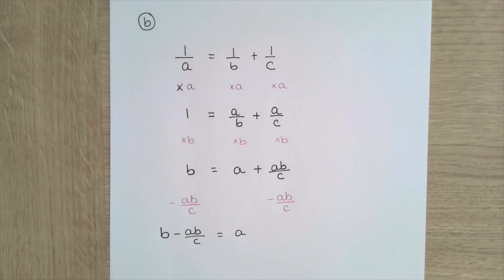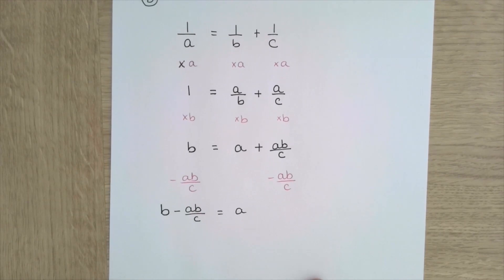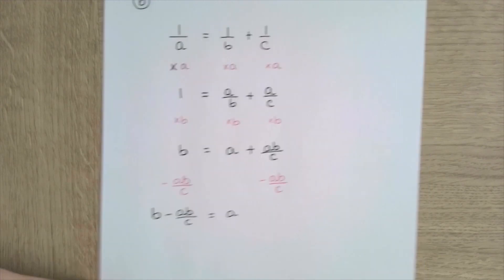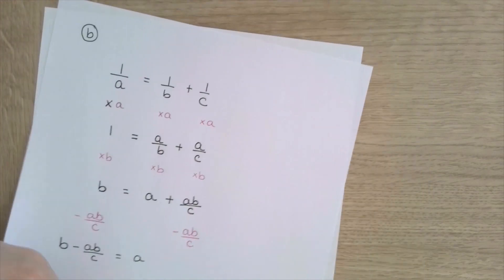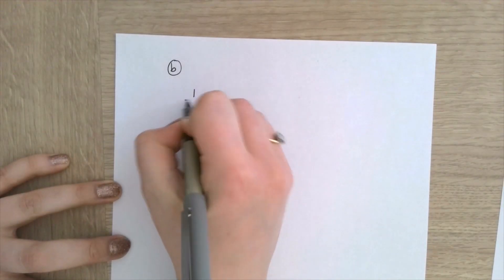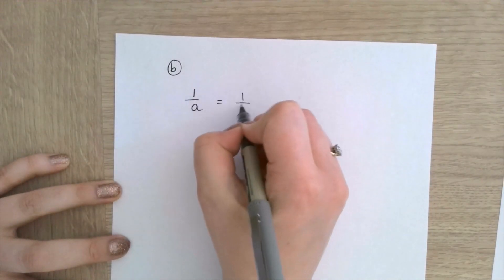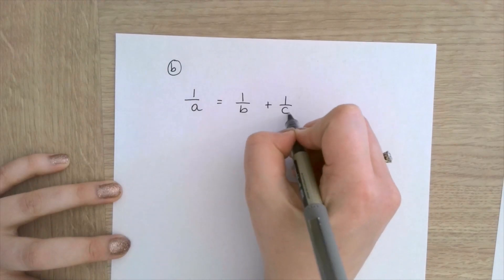I'm going to factorize now. Actually I think I'm going to start this again — I do apologise. This was starting to get very ugly. So I'm going to rewrite the question: 1 over a equals 1 over b plus 1 over c. I'm still going to multiply everything by a as I did at the beginning.